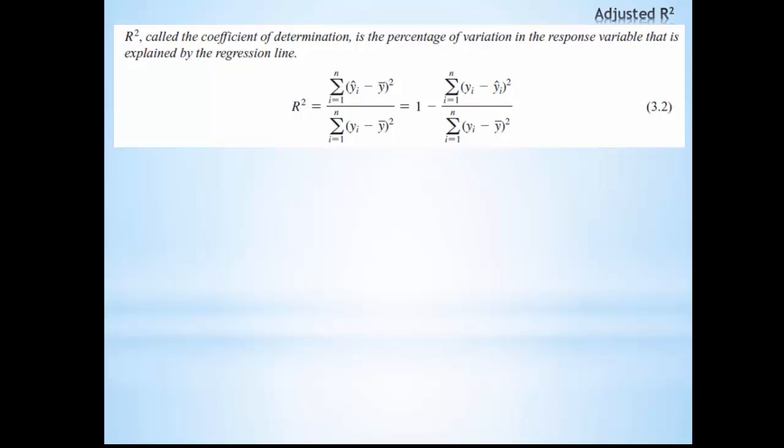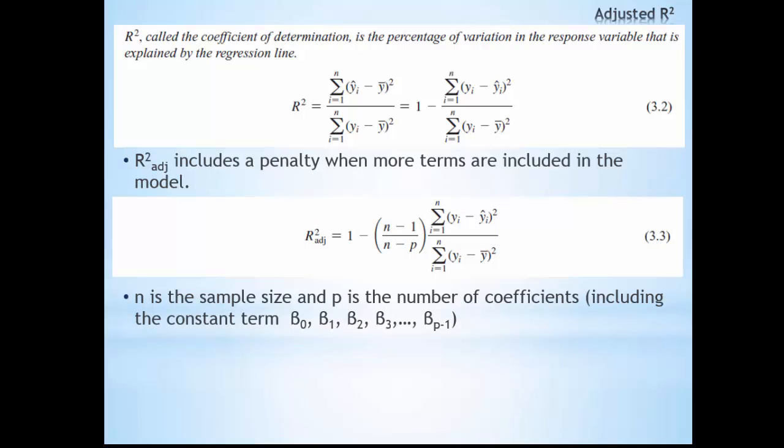One way to address this is to use the adjusted R-squared value. The adjusted R-squared calculation looks a lot like the standard R-squared calculation, except it has this one additional term of n minus 1 divided by n minus p, where n is the sample size and p is the number of coefficients. The adjusted R-squared adds a penalty when more terms are included in the regression model.